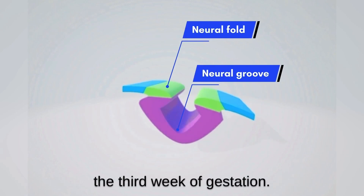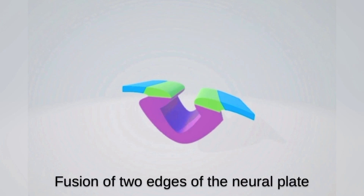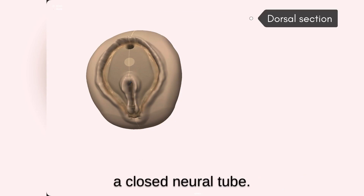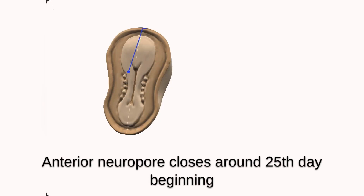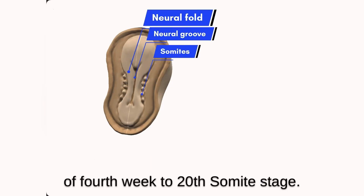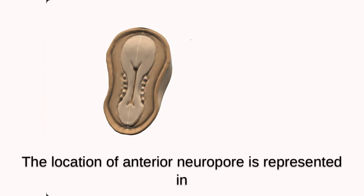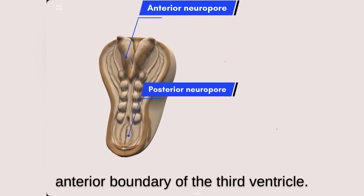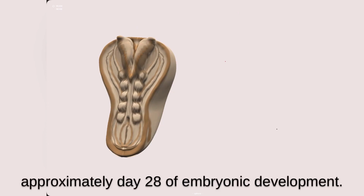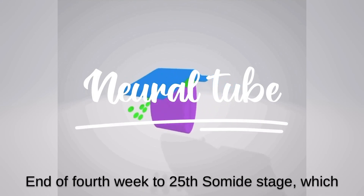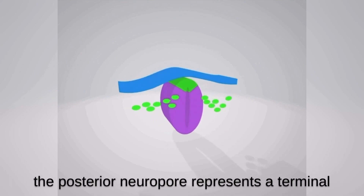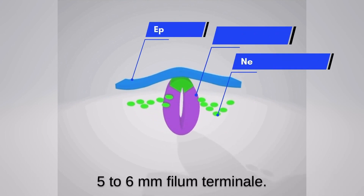This groove becomes deeper through the third week of gestation. Fusion of the two edges of the neural plate extends cranially and caudally, starting in the middle. Ultimately, the neuropores disappear, leaving a closed neural tube. The anterior neuropore closes around the 25th day, beginning of the 4th week at the 20-somite stage. The location of the anterior neuropore is represented in the adult as the lamina terminalis, which forms the anterior boundary of the third ventricle. The closure of the posterior neuropore occurs at approximately day 28 of embryonic development, at the 4th week and 25-somite stage, which marks the formation of the neural tube. In the adult, the posterior neuropore represents the terminal ventricle present in the proximal 5 to 6 mm of the filum terminale.